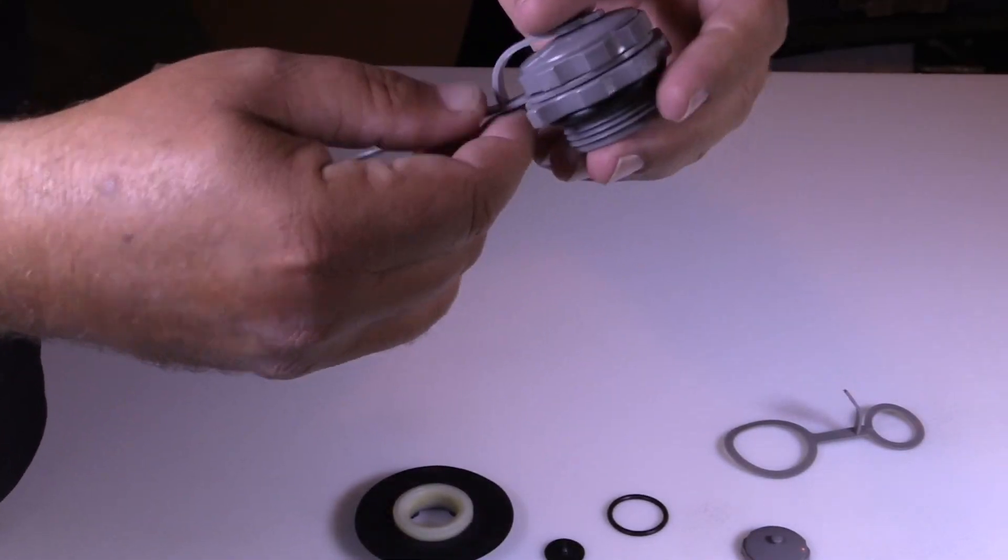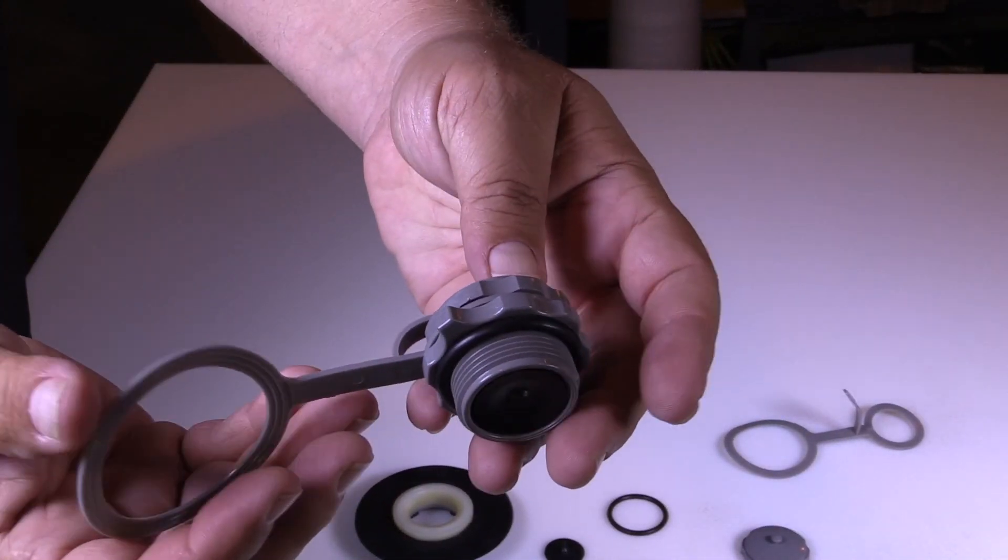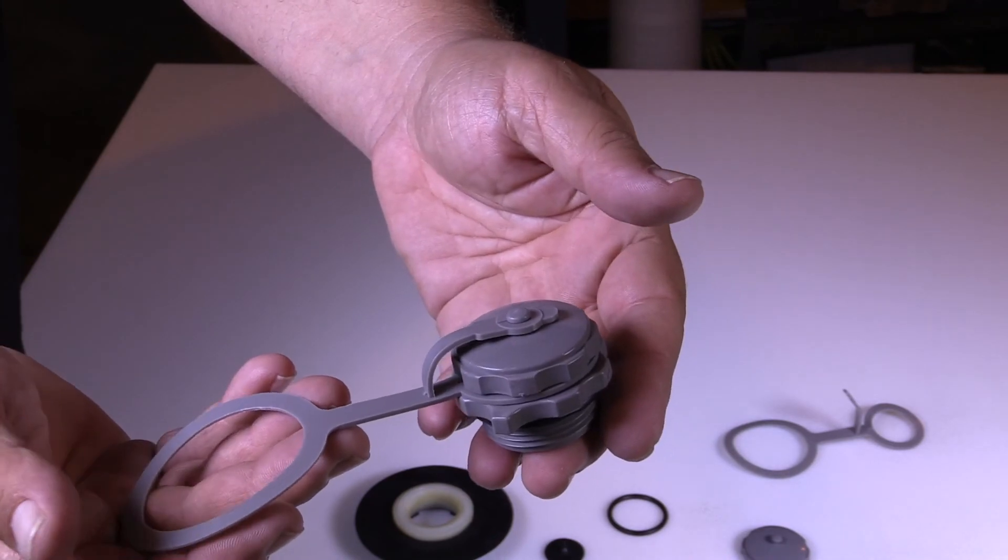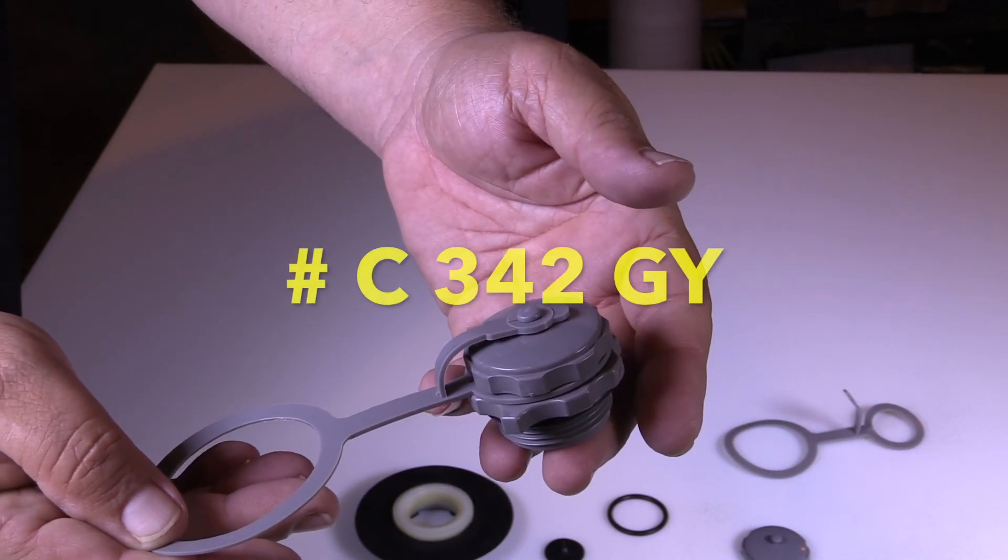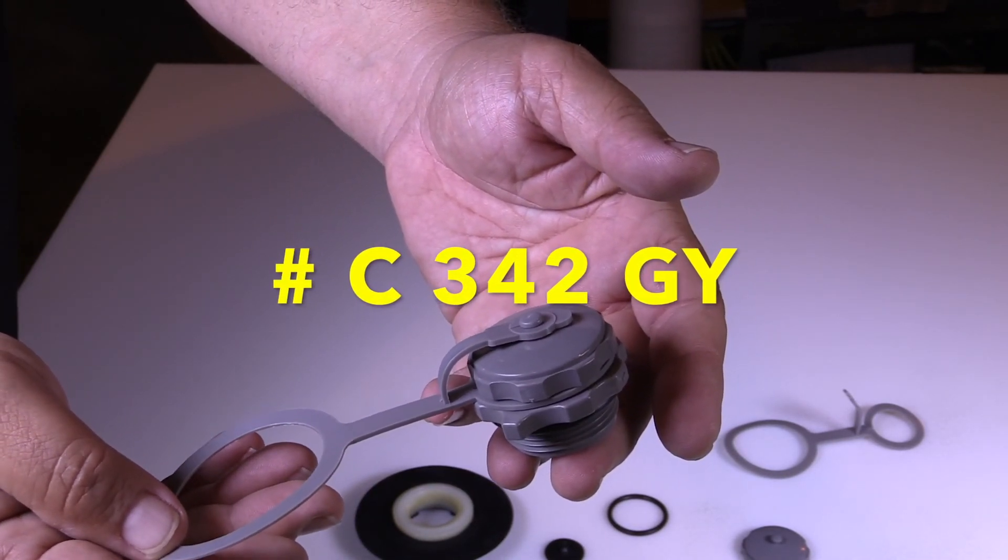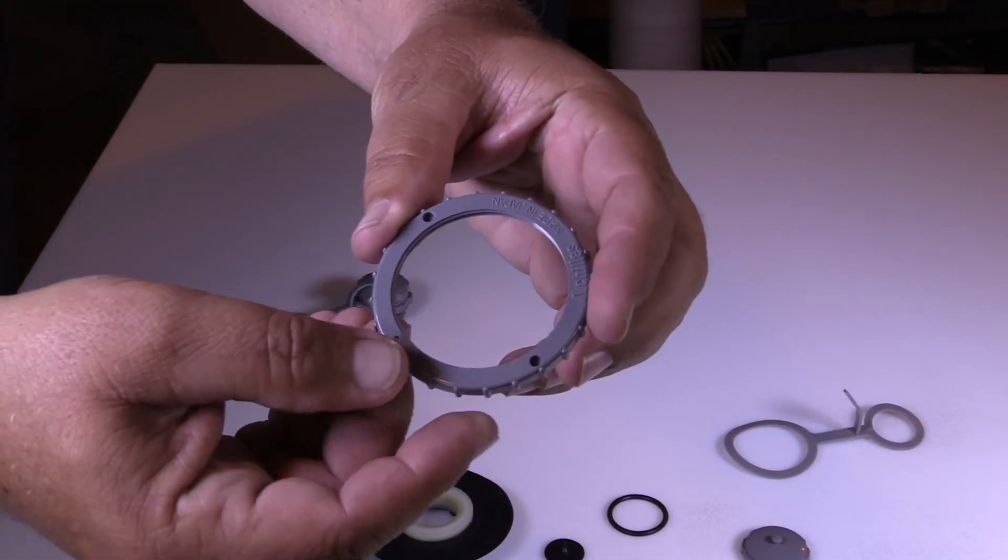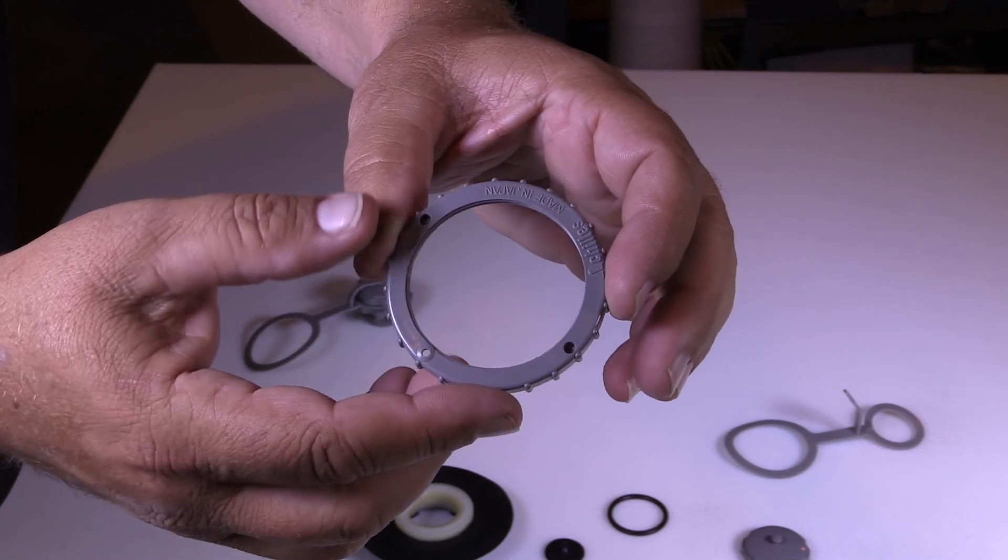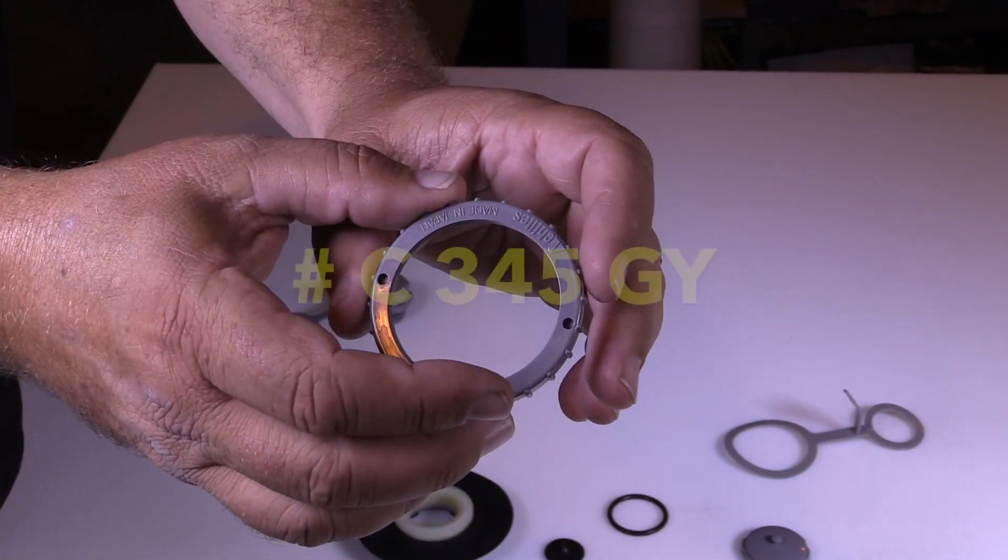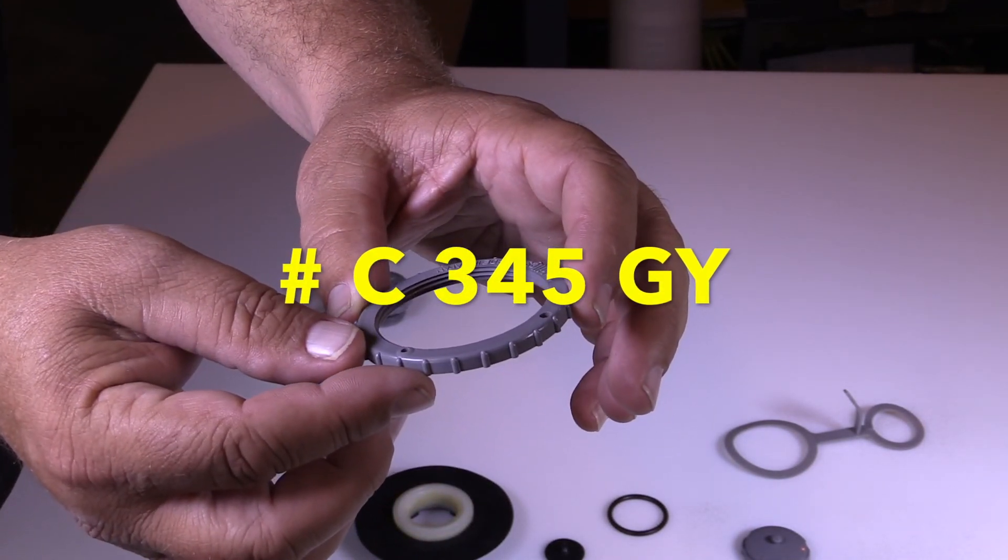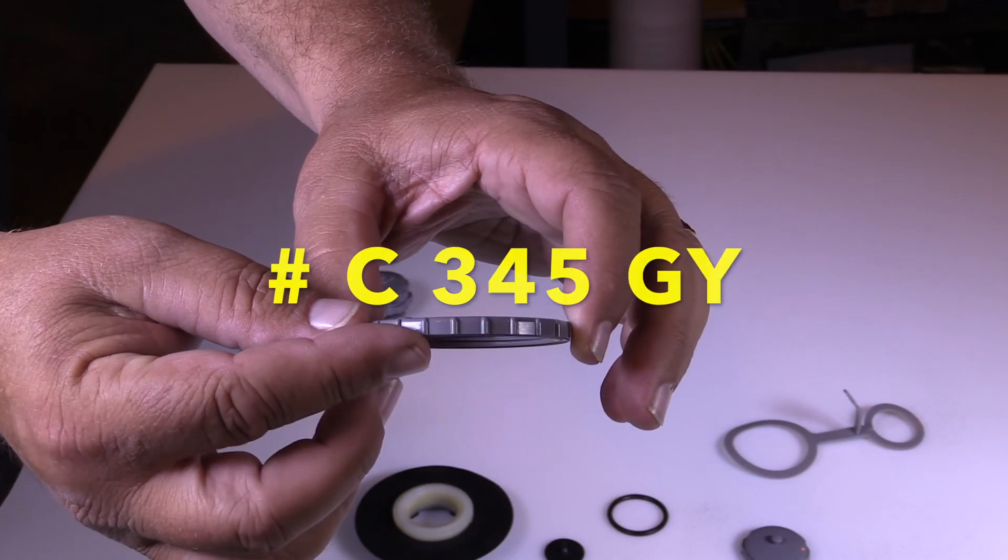So the complete valve, as you see here with the strap, this is Achilles part number C342GY. The casing ring is Achilles part number C345GY.